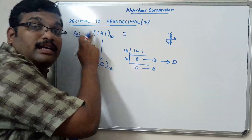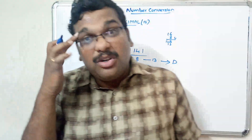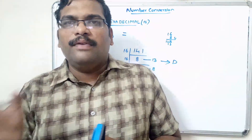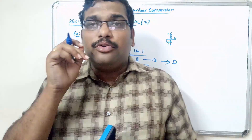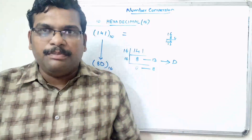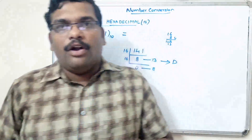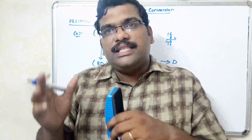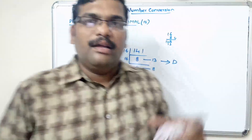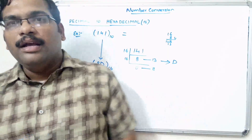So the hexadecimal representation of decimal 141 is 8D. The same process is followed for all conversions from decimal to octal, binary, or hexadecimal: repeatedly divide the decimal number by the corresponding base value and store the remainder. For binary divide by 2, for octal divide by 8, for hexadecimal divide by 16. The remainders together form the equivalent representation.